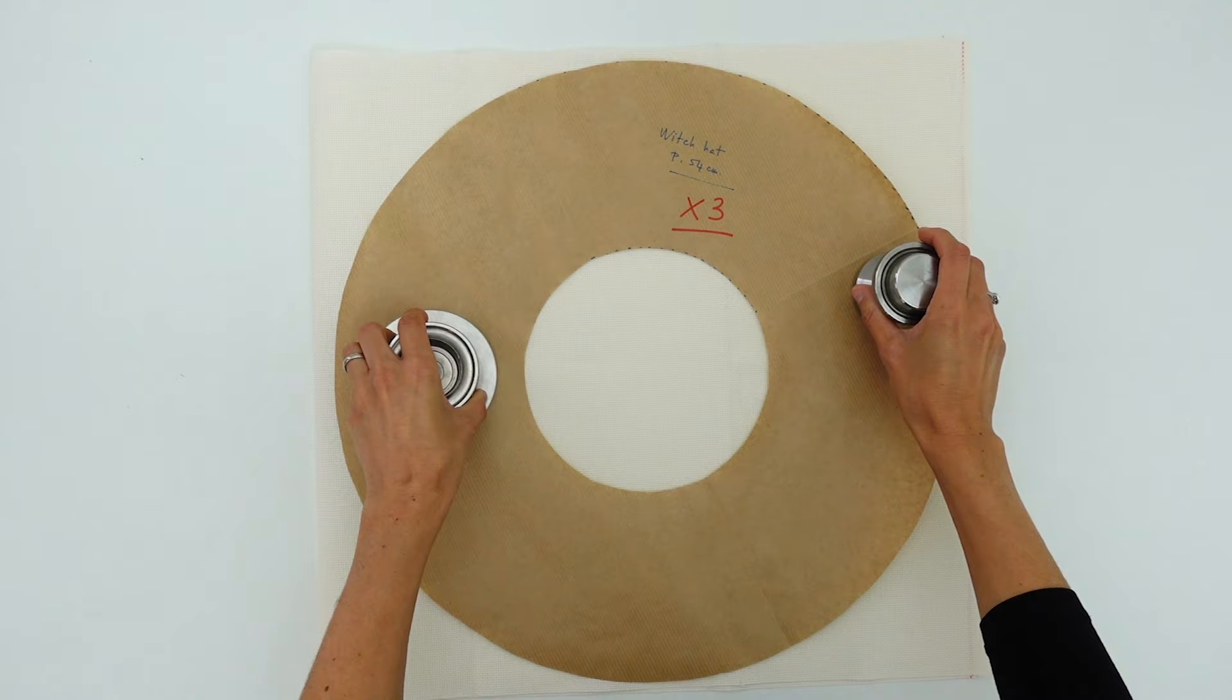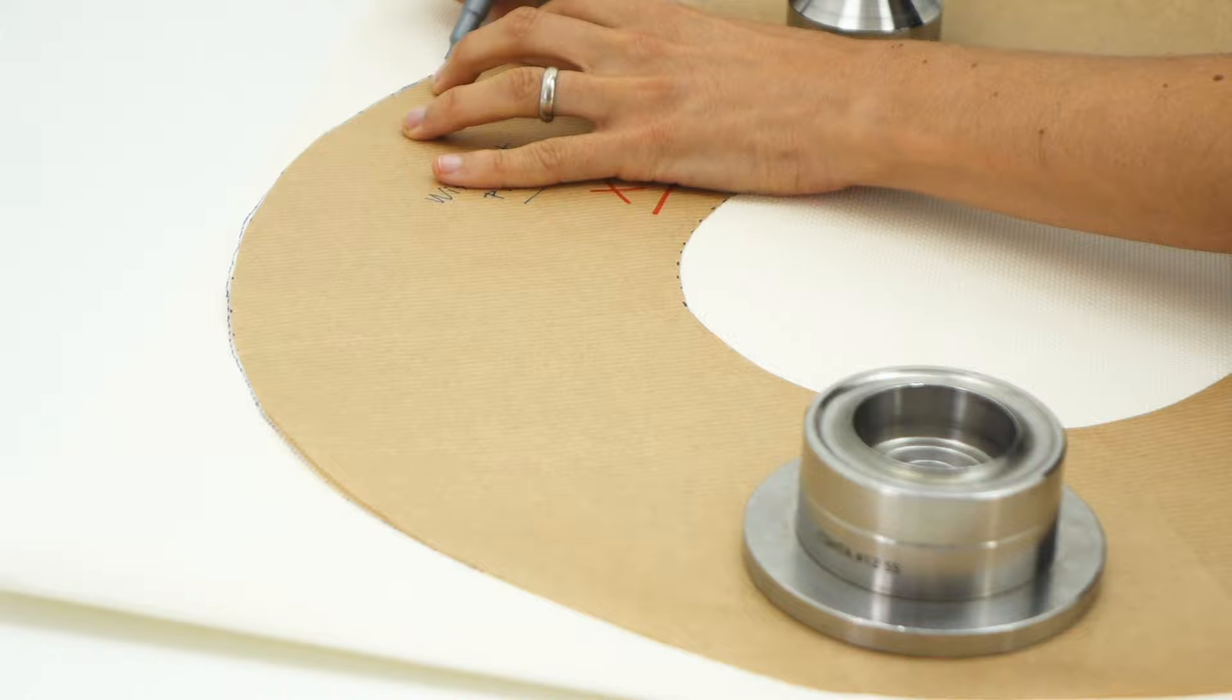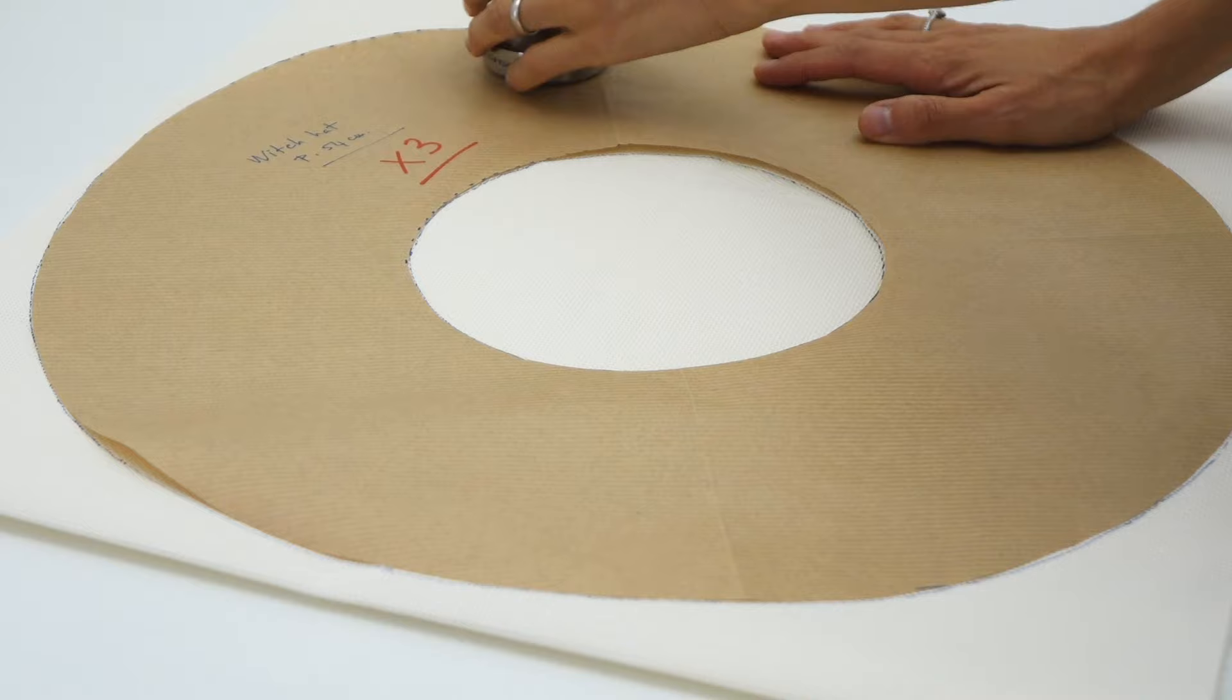Here is the sew on interfacing I am working with. I double it since it is not firm enough to my liking. Then I can trace my piece. Once again, feel free to use an iron in fusible if you wish. I'd rather use up what I have on hand.